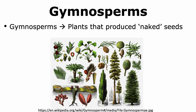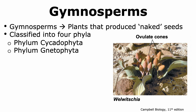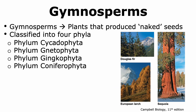Gymnosperms are seed-bearing vascular plants that produce naked seeds. The seeds are considered naked because there is no fleshy covering surrounding them, and hence gymnosperms do not make fruits. All gymnosperms can be classified into four phyla: phylum Cycadophyta, which includes different types of cycads that look like palm trees; phylum Gnetophyta; phylum Ginkgophyta, which has only one living species, the ginkgo biloba tree; and phylum Coniferophyta. Phylum Coniferophyta is the most diverse phylum and includes many different types of species, including redwood trees and sequoia trees.